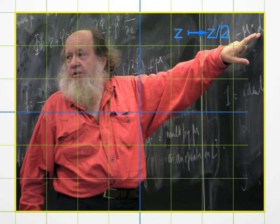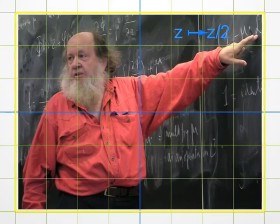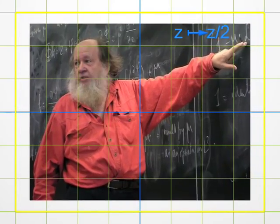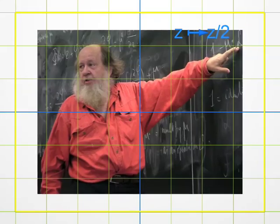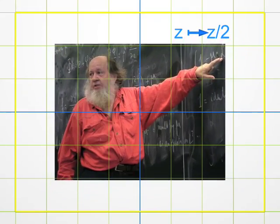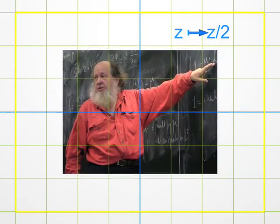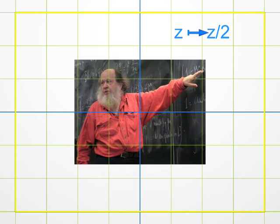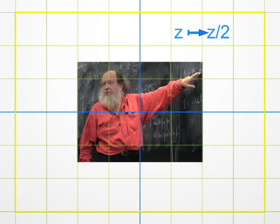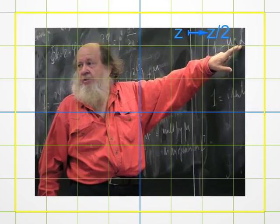Let's begin with something simple. The transformation Z goes to Z over 2. Each point on the photo corresponds to a complex number Z that's divided by 2. We get another point — its image by the transformation, hence a new picture. You see, no surprise, I just shrank to half the size since each Z has been divided by 2.